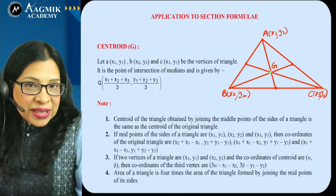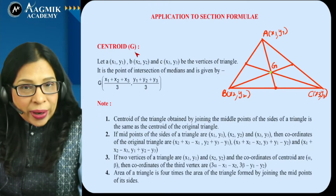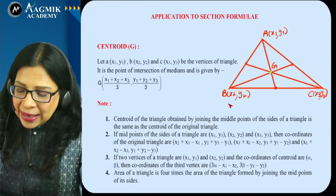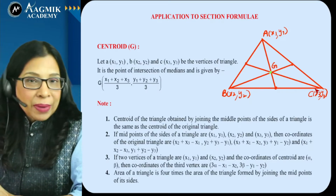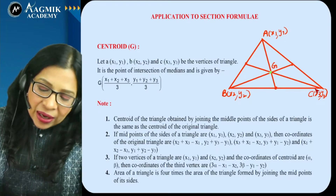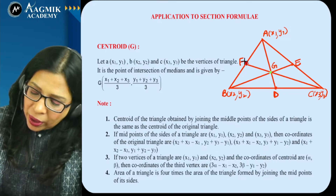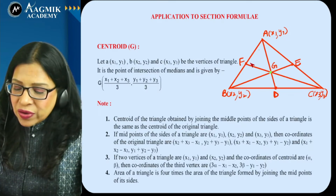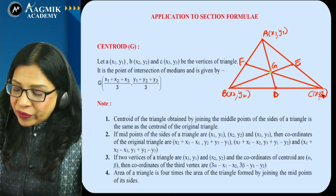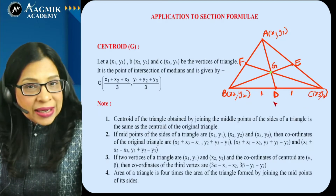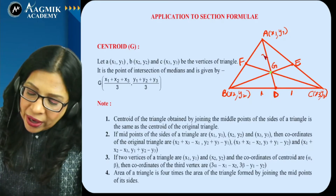Now the application of section formula: four points of concurrency. First, the centroid. For a triangle with vertices A(x1,y1), B(x2,y2), C(x3,y3), medians meet at the centroid G. Let D, E, F be the midpoints of sides BC, AC, and AB respectively. Any median is divided by the centroid in the ratio 2:1.